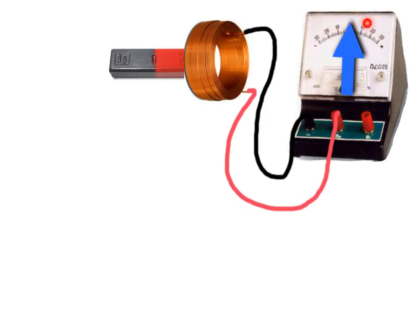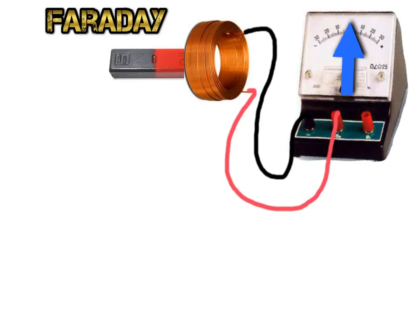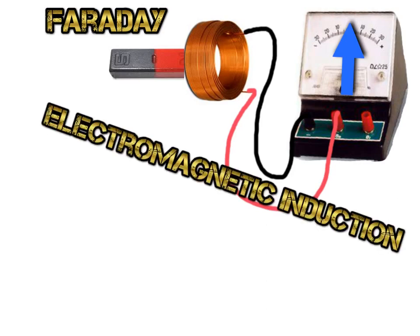So we don't get any movement of the galvanometer. We don't get any electricity being produced for a magnet that's still. And that's important because it goes correctly with our ideas about conservation of energy. So this is one of the things that Faraday demonstrated and we call it electromagnetic induction.